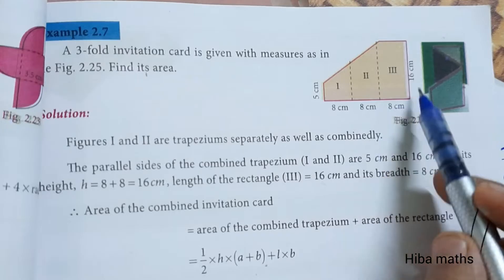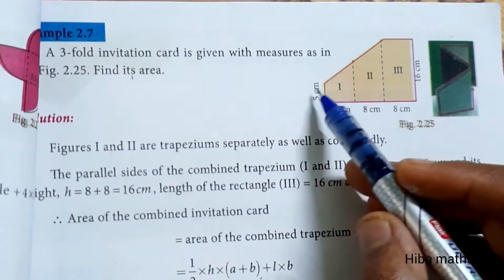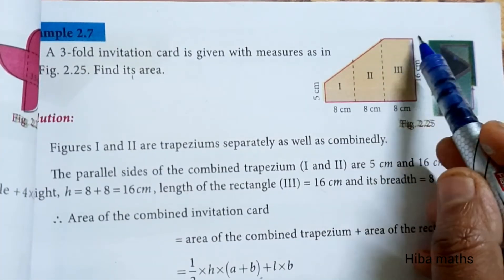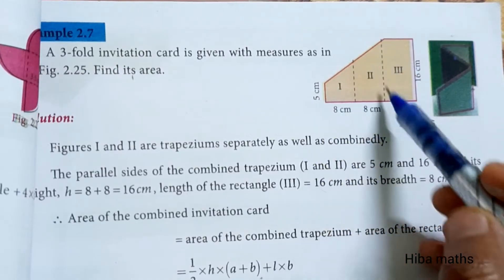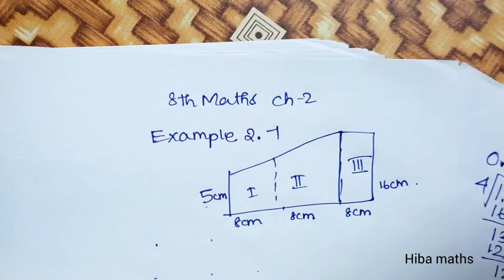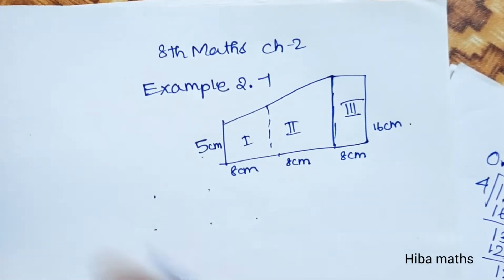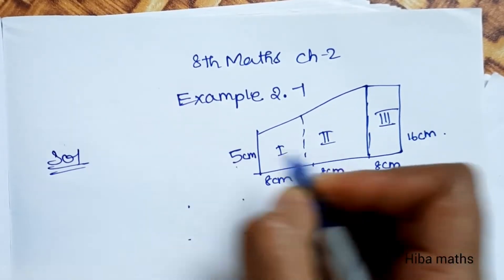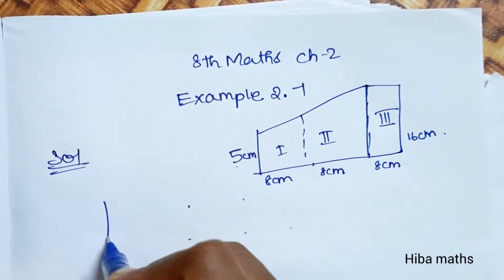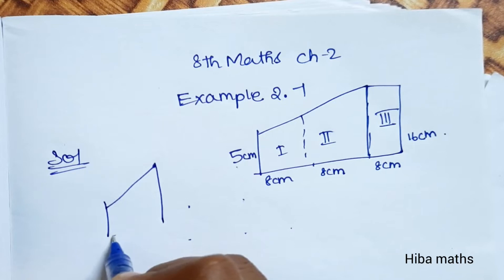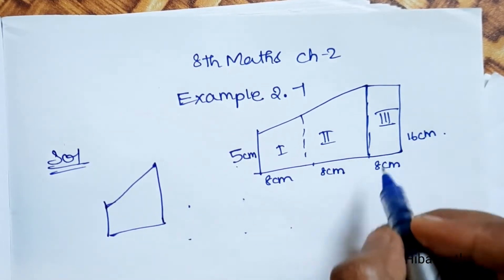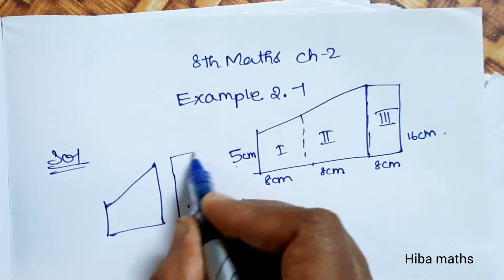This is the diagram. One part is a trapezium, another part is a trapezium, and the third part is a rectangle. Let's write this in the notes. We can identify figures 1 and 2 as trapeziums, and the third one as a rectangle.